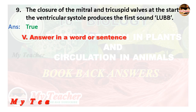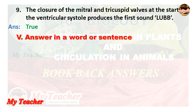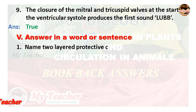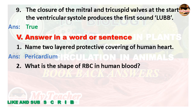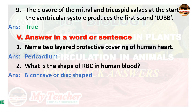Answer in a word or sentence. First: Name the two-layer protective covering of the human heart — Answer: Pericardium. Second: What is the shape of RBC in human blood? Answer: Bi-concave or disc shape.